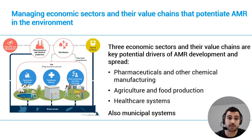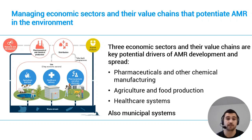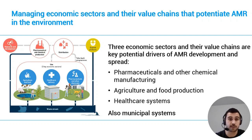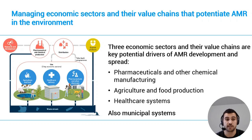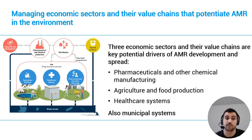UNEP's report also gives a clear picture of the sectors and value chains that have the biggest influence on AMR. The pharmaceutical industry, agriculture and food production, and healthcare systems are the main drivers that potentiate AMR in the environment. Municipal waste and wastewater systems also play a big role.